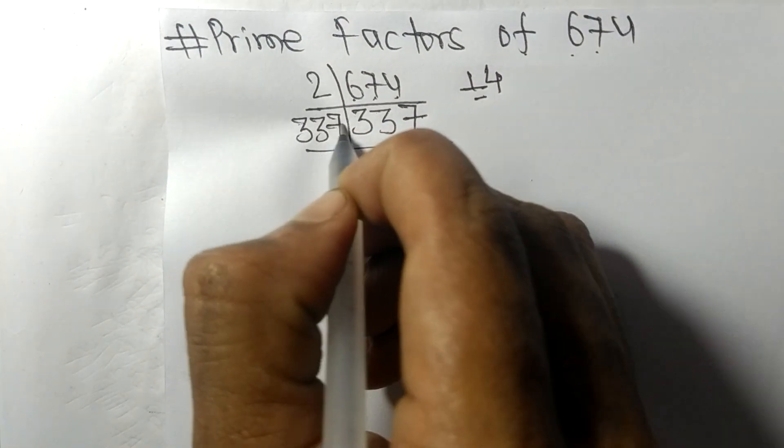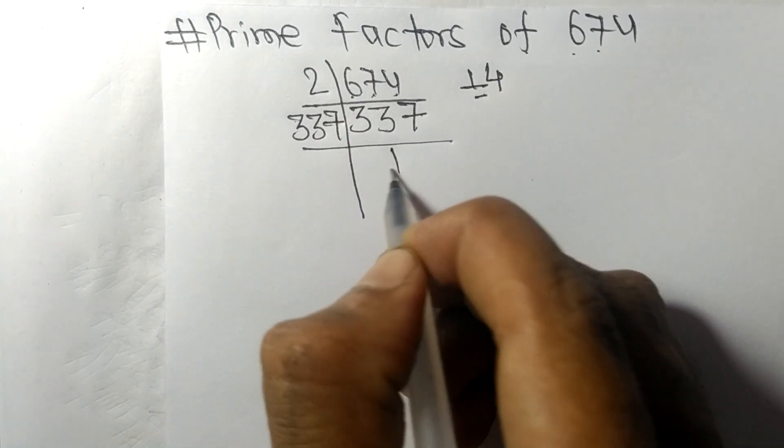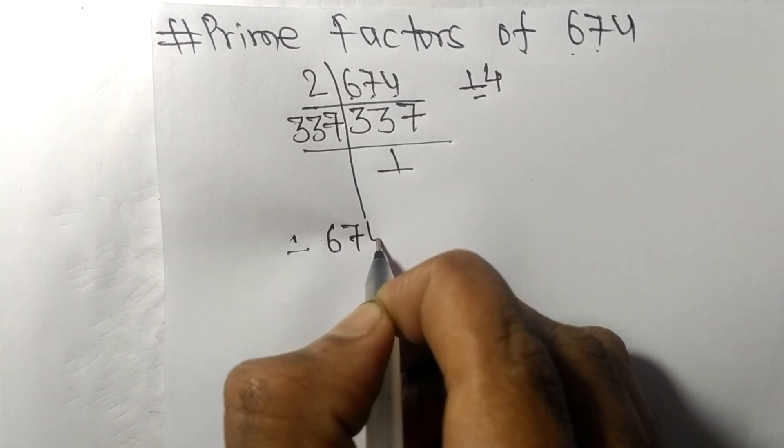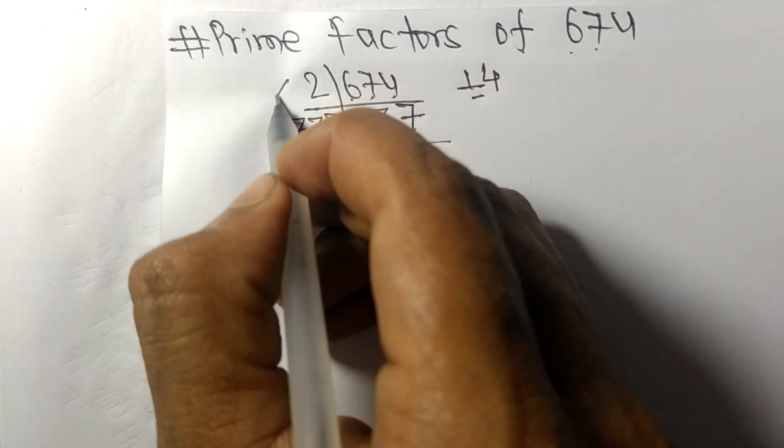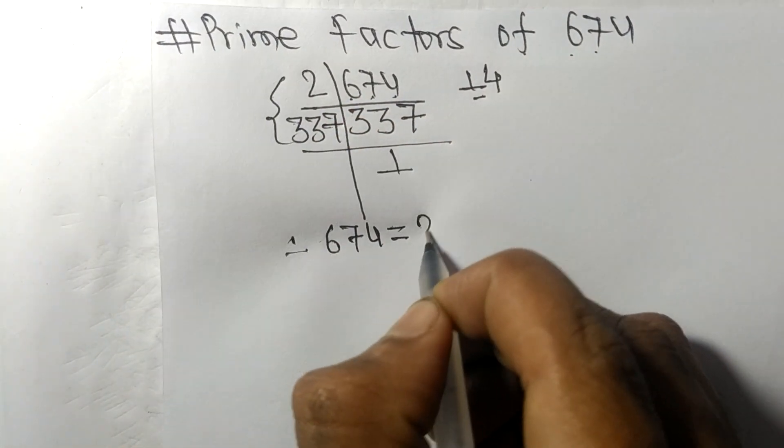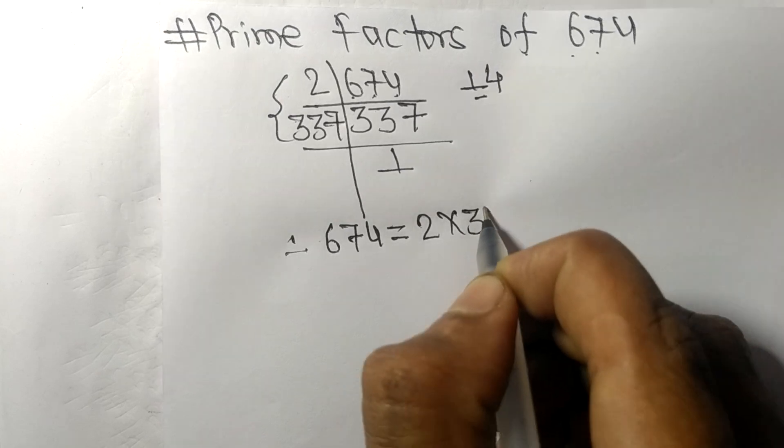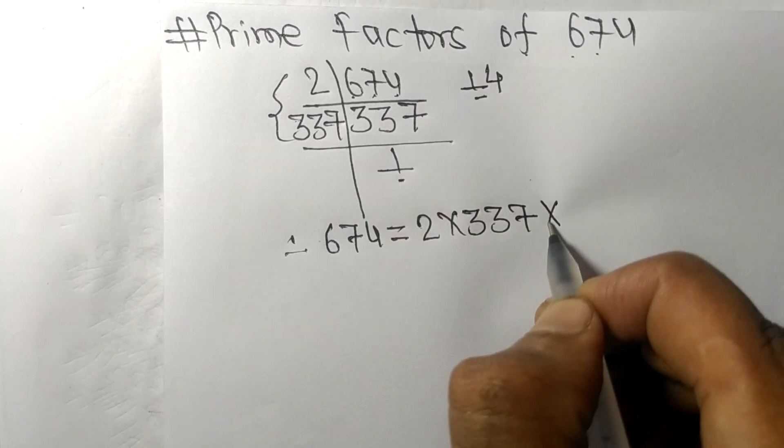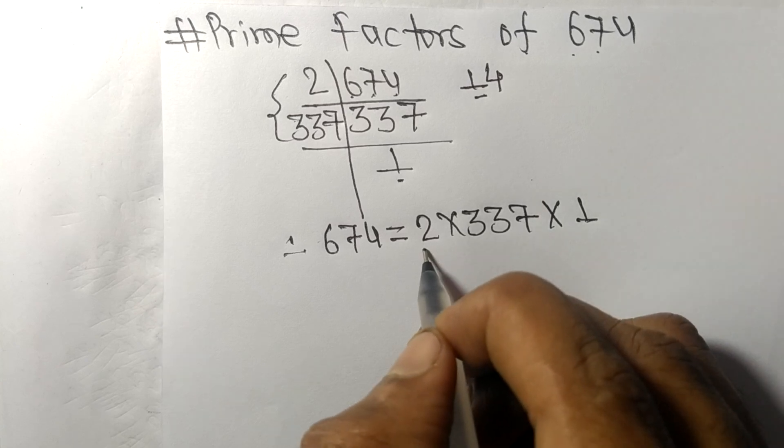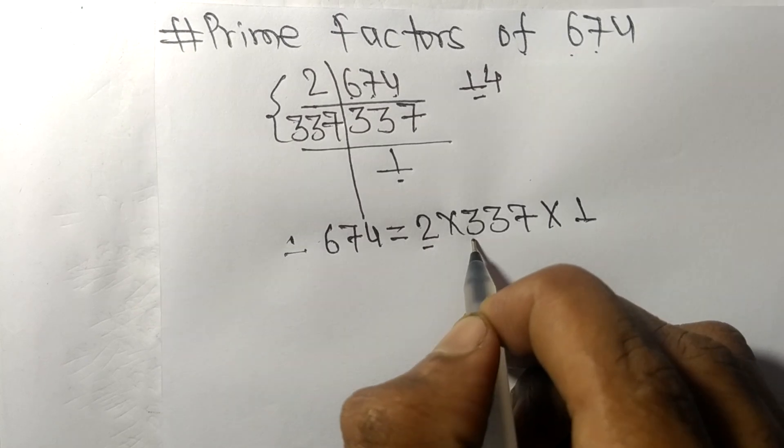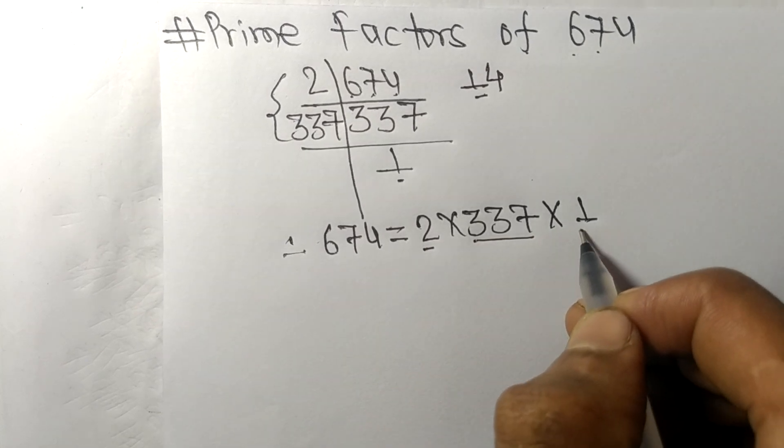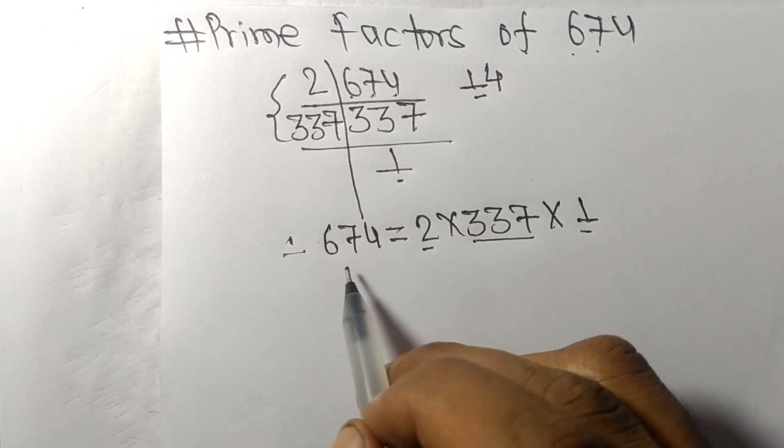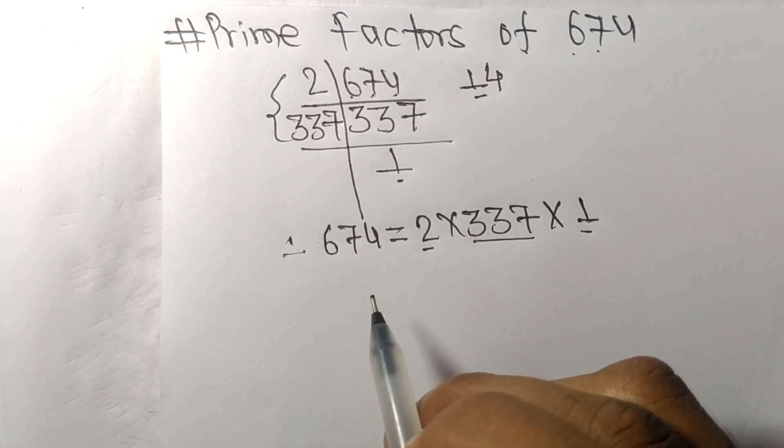And we get here 1. Therefore, 674 is equal to 2 times 337 times 1. So 2, 337, and 1 are the prime factors of 674.